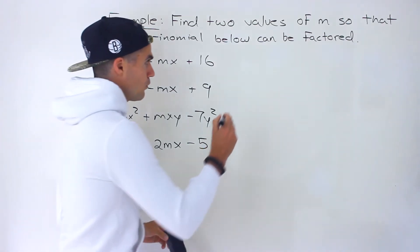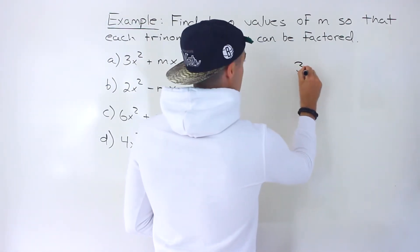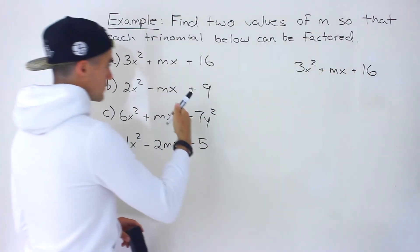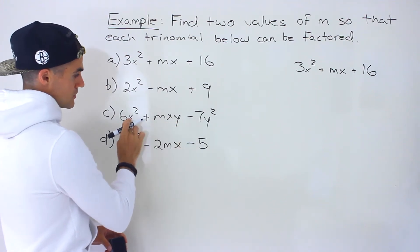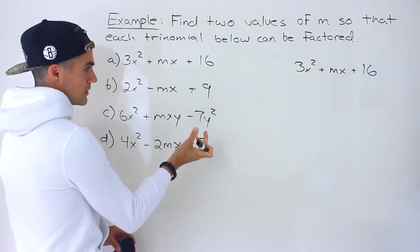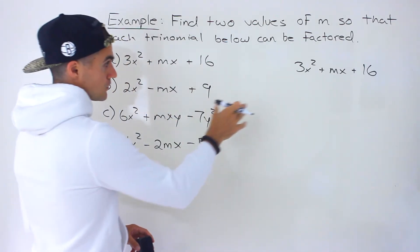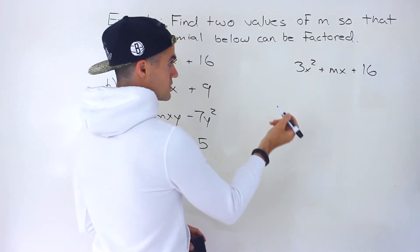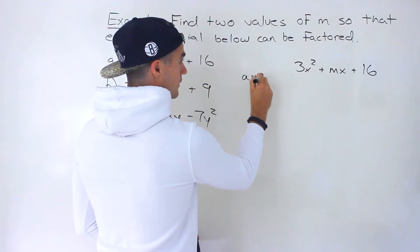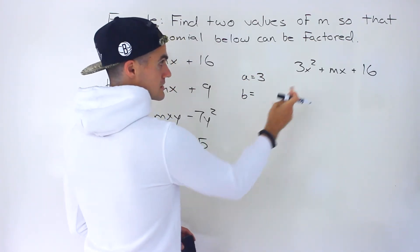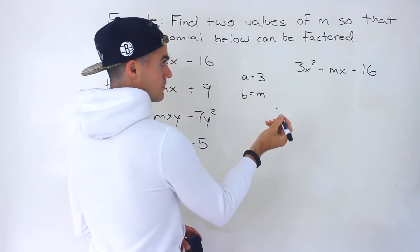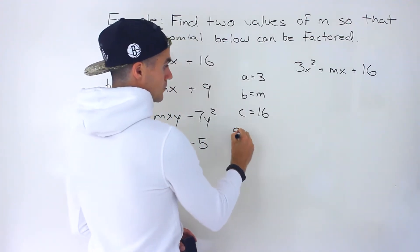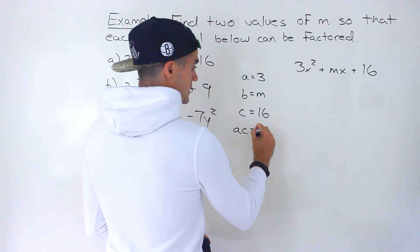Personally, the way I go through these is I basically take the trinomial. Most of them are going to be quadratics except for this one over here, which is a multi-variable trinomial, but the same process applies. With this particular quadratic, I go through the same process of factoring. The a value is 3, the b value is positive m, the c value is 16, and then the ac value is 3 times 16 which is 48.